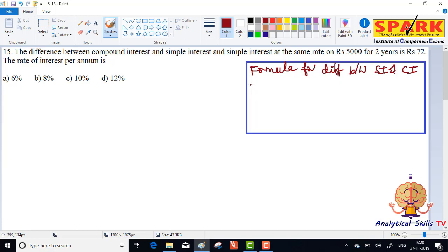First, for two years, the difference is equal to sum into r square by 100 square.